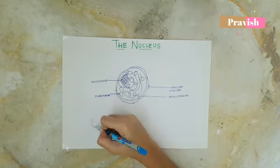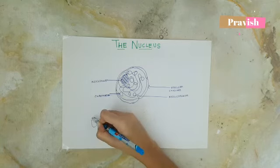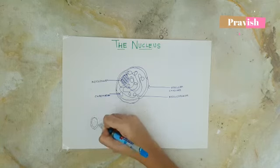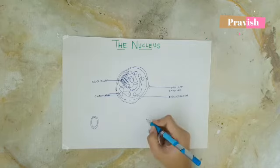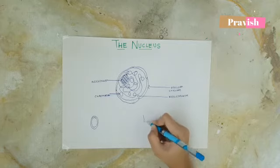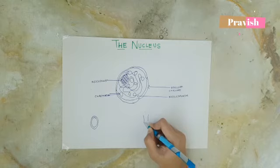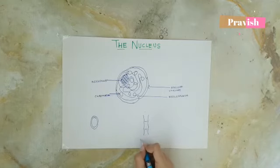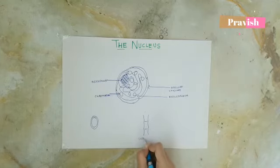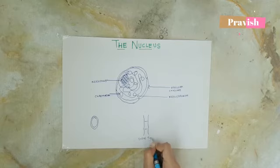This is how a red blood cell looks like. The red blood cell floats in the blood of the human. It does not have a nucleus. This is how a plant sieve cell looks like. This also does not have a nucleus.